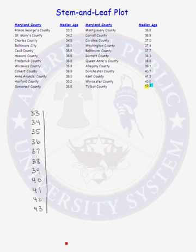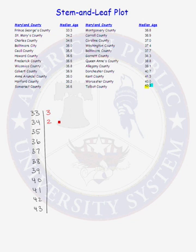Now we're ready to graph each of our data values. Our first data value is 33.3 — we have a stem of 33 and a leaf of 3. Our next data value is 34.2 years, so the stem will be 34 and the leaf will be 2. We also have a 34.6 median age, so we put the 6 right there.